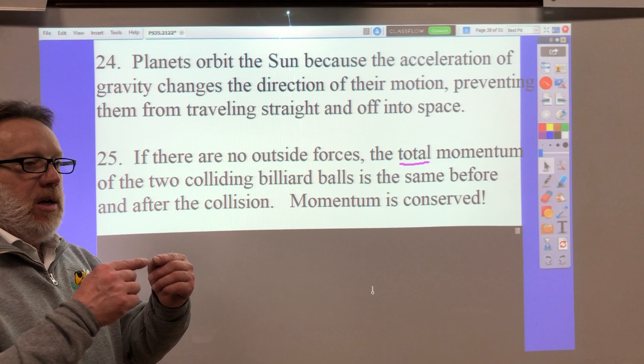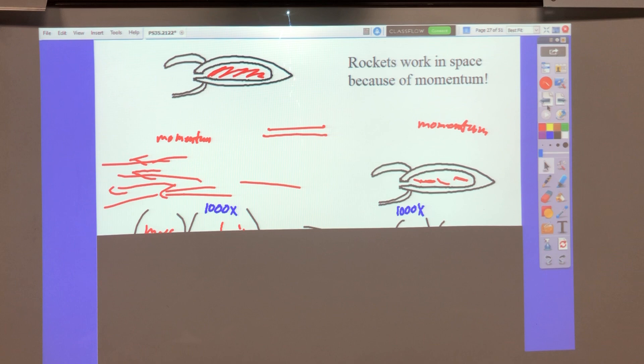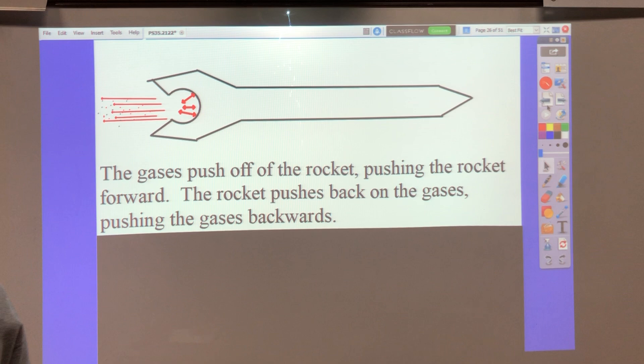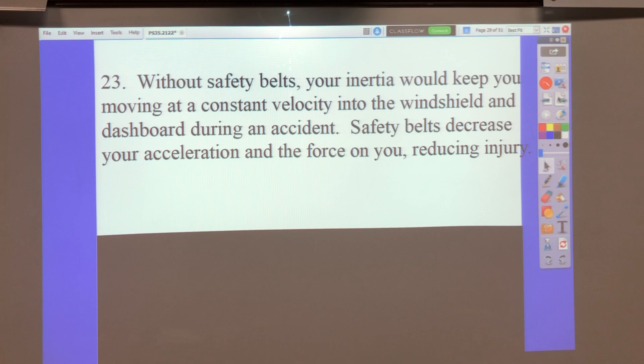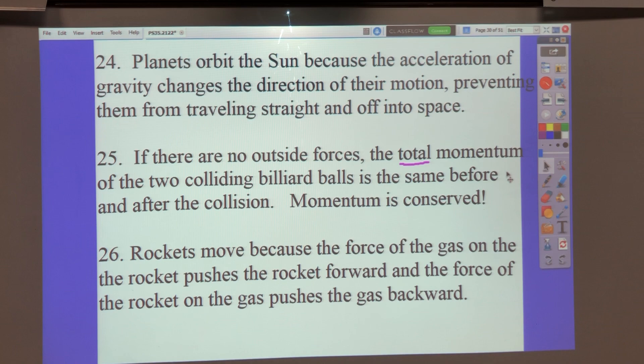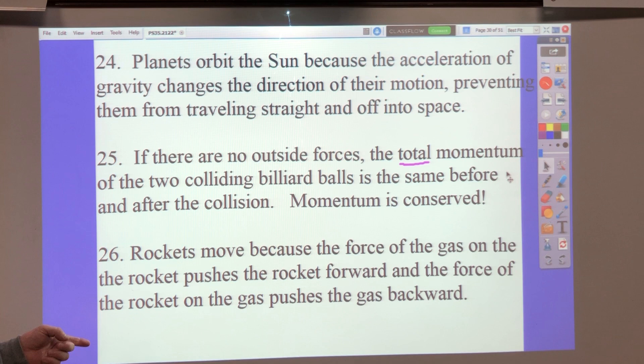Number 26. How can a rocket move through outer space where there's no matter for it to push on? Because what's being pushed on is, here's the push. The rocket gases are pushing on the rocket motor, and they push each other away. That's where the push is. Rockets move because the force of the gas on the rocket pushes the rocket forward, and the force of the rocket on the gas pushes the gas backward. So the gas pushes the rocket forward. The rocket pushes the gases backwards.